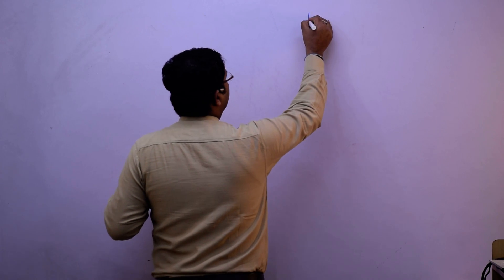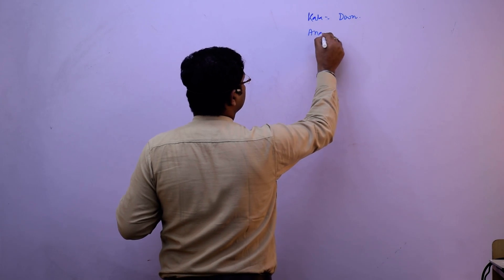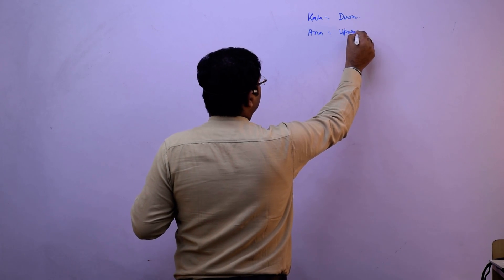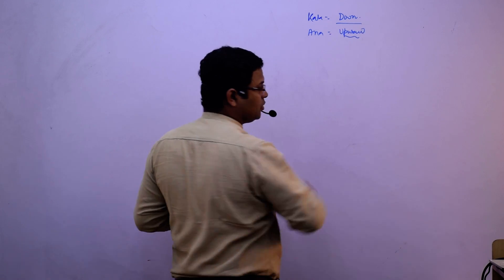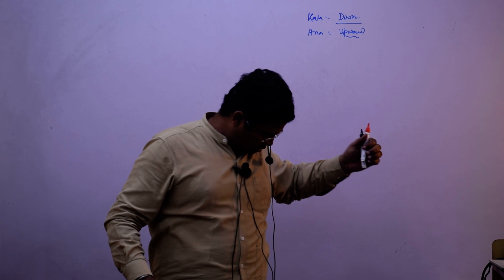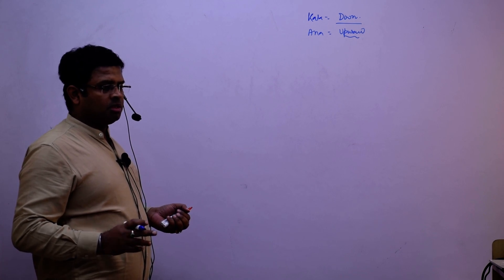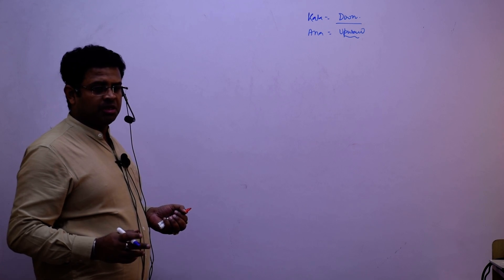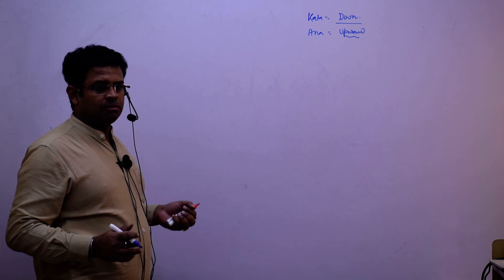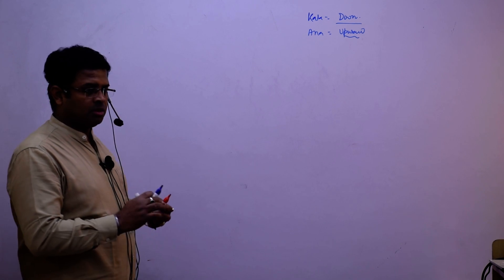Kata means downward movement and Anna means upward movement. Kata, whenever you hear the word, what does it mean? Downward. And Anna means upward. If you cut your head, it will come down or go up? Downward, so you can understand kata means downward.